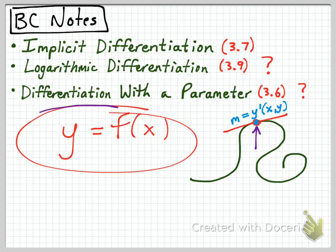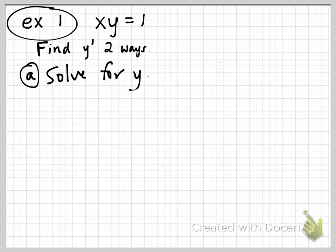When y is defined explicitly in terms of x, we just differentiate the right side and find the derivative explicitly. We're going to start with the example x times y equals 1, and we'll find y prime in two ways. The first way is to solve for y, and the second way is to use implicit differentiation.